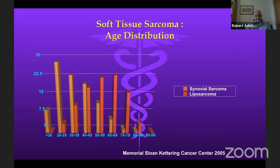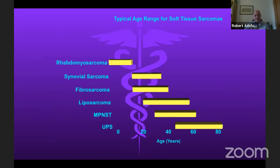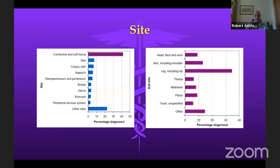Age distribution is variable depending on subtype. Liposarcoma is a disease of the older population compared to synovial sarcoma. Rhabdomyosarcomas are one of the more common cancers in the teenage and childhood population, synovial sarcomas present in a younger adult group, and as you get older different sarcomas come in at higher incidence. As far as site is concerned, half of sarcomas occur in connective and soft tissue, and of those the majority occur in the limbs, though they can occur in the trunk wall or anywhere.